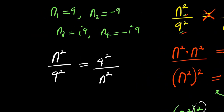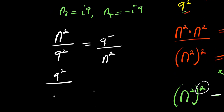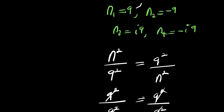Let's start when n equals 9. This is very obvious: we have 9 power 2 divided by 9 power 2 equals 9 power 2 divided by 9 power 2. Both sides give 1 equals 1. So this is correct.